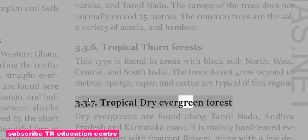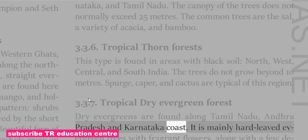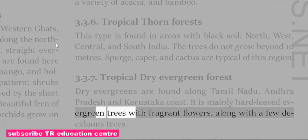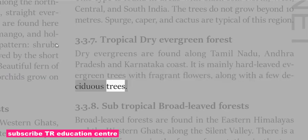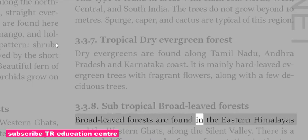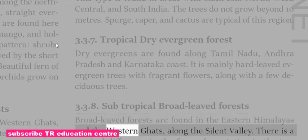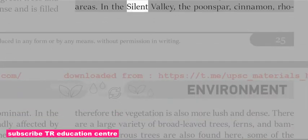Tropical Dry Evergreen Forests are found along Tamil Nadu, Andhra Pradesh and Karnataka coasts, mainly comprising hardleaved evergreen trees with fragrant flowers along with a few deciduous trees. Subtropical Broadleaved Forests are found in the Eastern Himalayas and the Western Ghats along the Silent Valley. There is a marked difference in the form of vegetation in the two areas; in the Silent Valley, species like boons park and cinnamon are found.